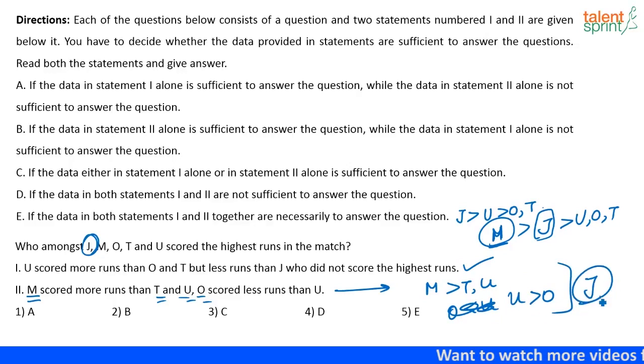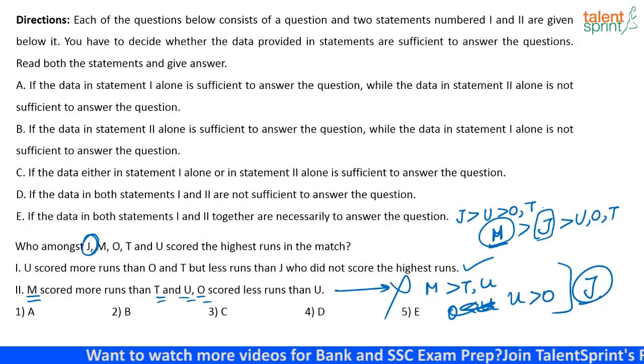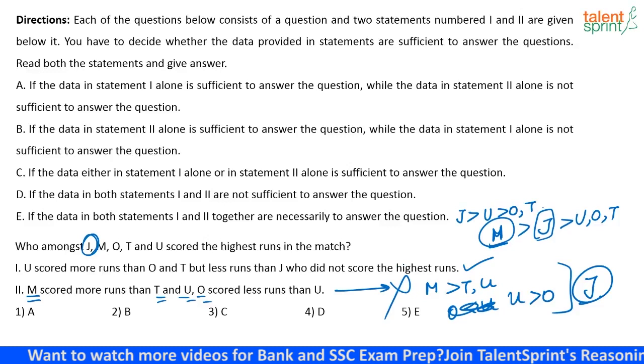Again, nothing is mentioned as to who has scored the highest. Even if they had said that M has scored the highest or something like that, then you could look at the second statement. Nothing like that is given. So, using the second statement alone, you cannot say anything about the person who has scored the highest run.